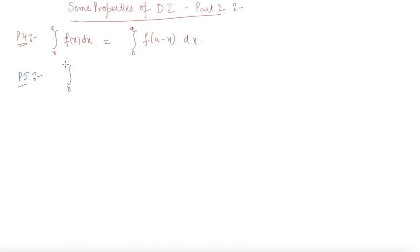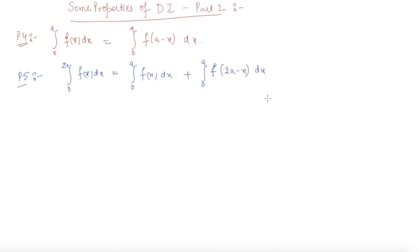The next property, P5, states that the integral from 0 to 2a of f(x) dx equals the integral from 0 to a of f(x) dx plus the integral from 0 to a of f(2a minus x) dx. This property uses P2 and P3. We can visualize this with points 0, a, and 2a on the number line.